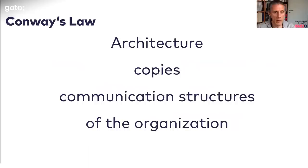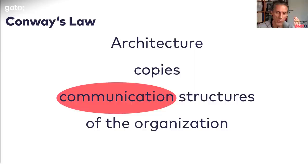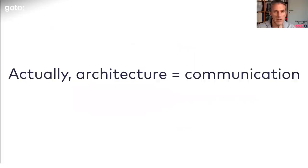There is an interesting misunderstanding here, because what Conway's Law really says is that architecture copies the communication structures — not the org chart. We've been speaking about the organizational chart, but there are people in an organization who talk to one another even though they are not related on the org chart. As an example, Sven and I are not related on any org chart, but we are in the same organization and we just talk to one another. So Conway's Law is really about communication, not the org chart.